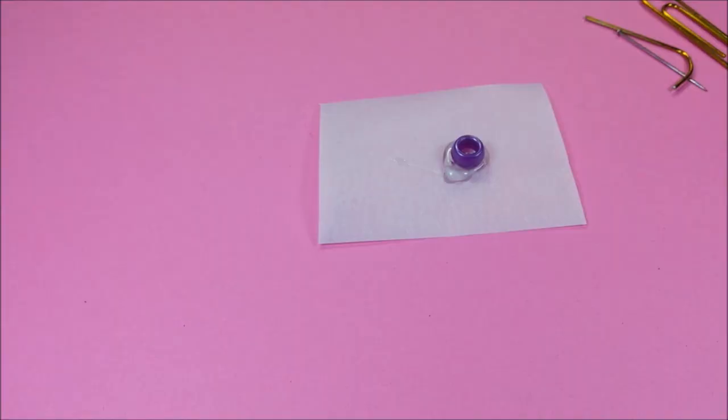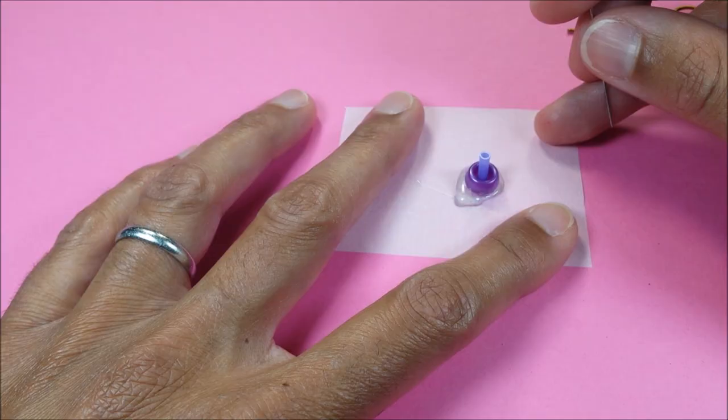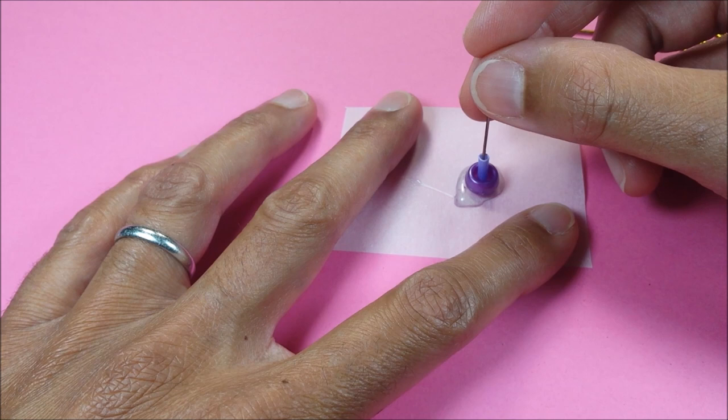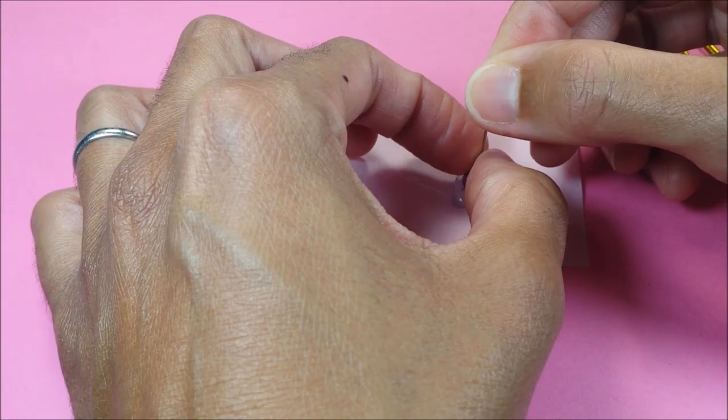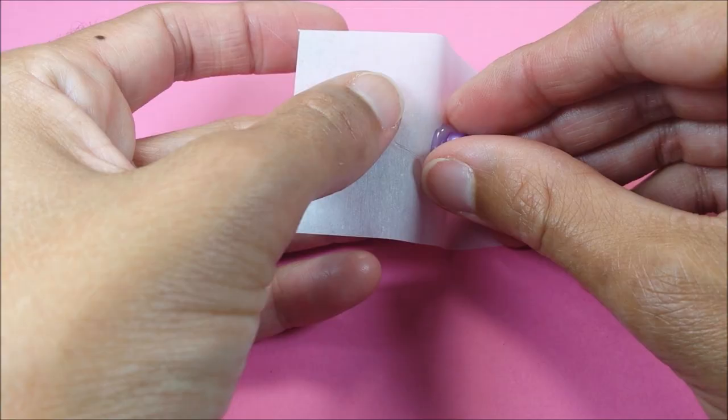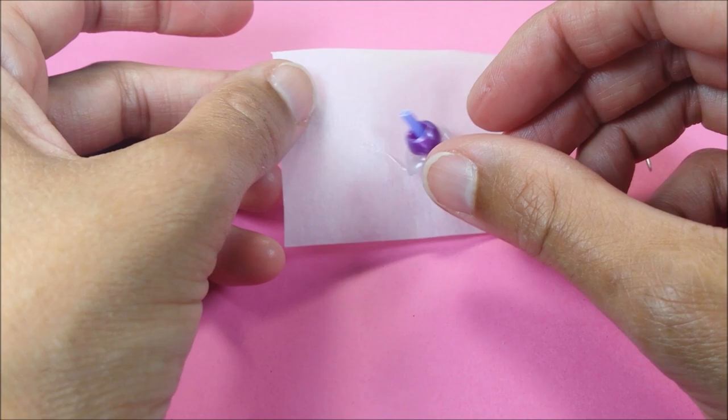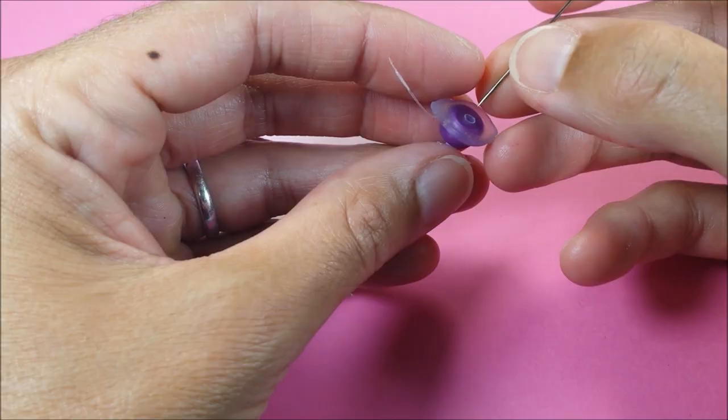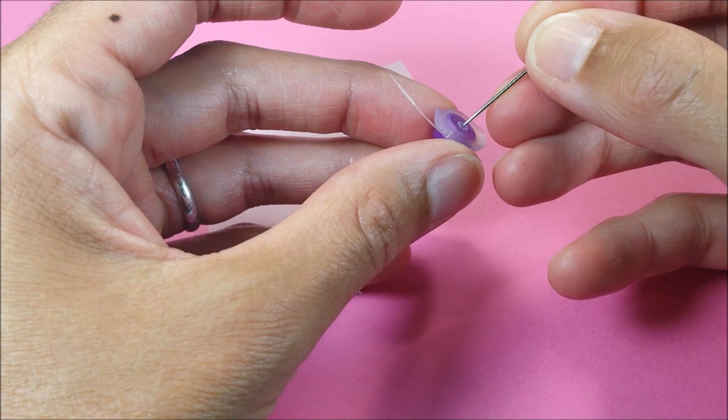As that begins to dry, I take my needle and push through to displace the glue inside my straw. Before it gets too hard, I carefully poke a hole.